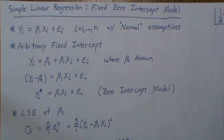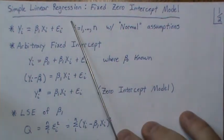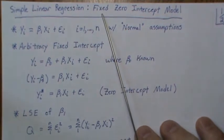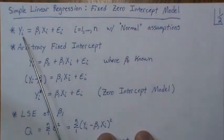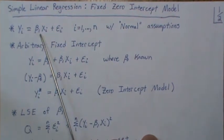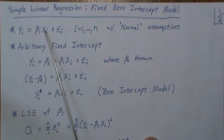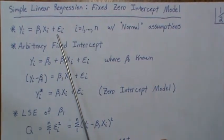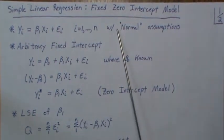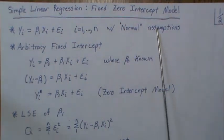Hello, in this video we're in the simple linear regression setting, but we're going to assume that we have a fixed zero intercept model. And what that means is we're going to let y equal this line that's forced through the origin, 0, 0, plus some error. And here we're going to assume the normal assumptions.